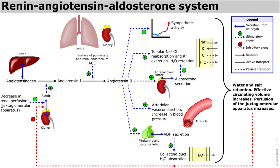Angiotensin 2 is a potent vasoconstrictive peptide that causes blood vessels to narrow, resulting in increased blood pressure. Angiotensin 2 also causes the release of antidiuretic hormone, also called vasopressin, which is made in the hypothalamus and released from the posterior pituitary gland, and it has vasoconstrictive properties.